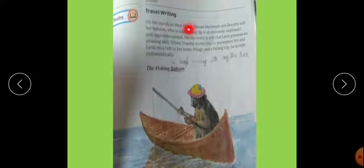Here is Travel Writing. On his travel in West Africa, Donald McIntosh met Dorothy and her baboon who is called Leval. He is an extremely unpleasant and aggressive, meaning bad-natured and angry animal. But the writer is told that Leval possesses amazing skills. He invites him to accompany her and Leval on a trek to her home village and a fishing trip. He accepts enthusiastically.